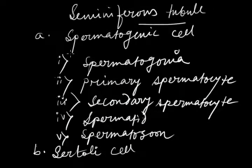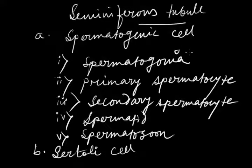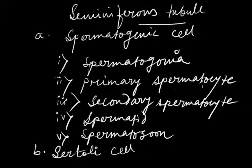The seminiferous tubule is composed of two types of cells: the spermatogenic cells and the Sertoli cells. Spermatogenic cells are actually sperm-producing cells, and they can be further divided into the following types: spermatogonia, primary spermatocyte, secondary spermatocyte, spermatid, and spermatozoa.